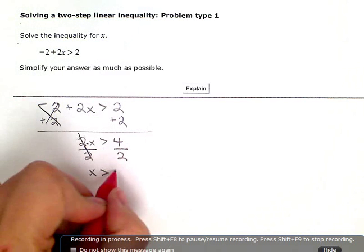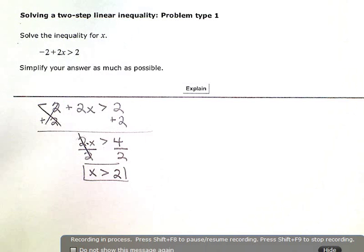4 divided by 2 is 2, so my final answer is x is greater than 2.